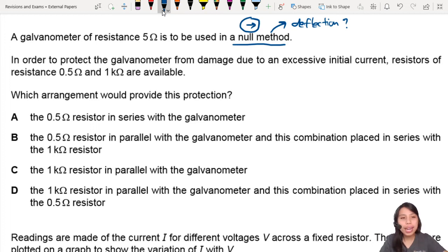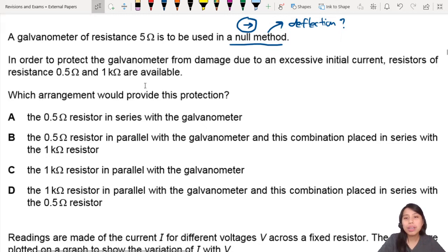You need to protect the galvanometer from damage due to excessive initial current. Too big of a current will cause the galvanometer to spoil. And you have two choices: resistance 0.5Ω and 1kΩ. Now, how shall you connect this thing up? We want to maximize the protection, so let's check through each circuit and draw it out.